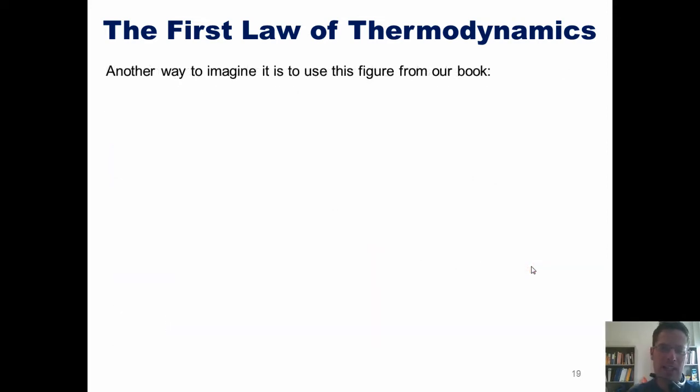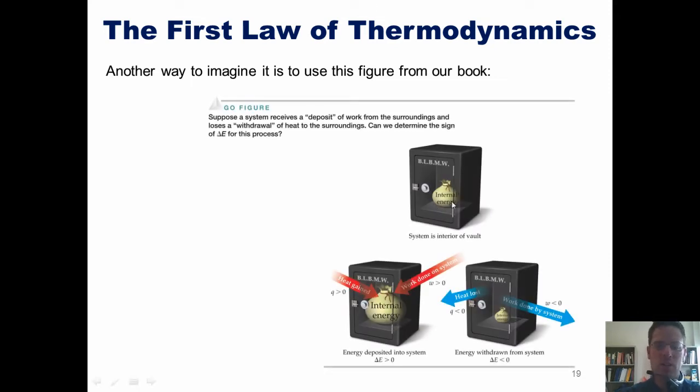Another way to imagine this is to use a figure from our book. I want you to imagine that the energy of a system represents a bunch of money inside a safe. If I have a system that accepts energy from its surroundings, either in the form of work or heat, then the amount of money inside that safe increases. In contrast, if I have a system that gives off energy in the form of heat or work, the amount of energy or money in that system decreases.